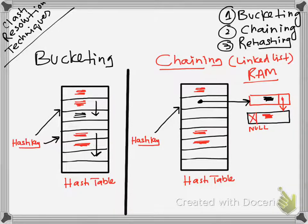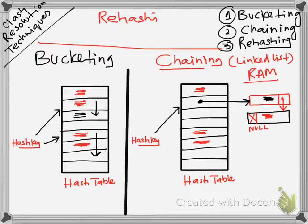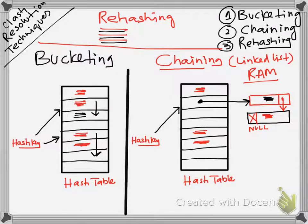While in rehashing, what happens is that you have a number of hashing algorithms — not just one, but multiple. If one clashes, the other one is used. If it clashes again, you use the next one. Similarly, you go through all the different hashing algorithms until one does not clash, and you save the record.